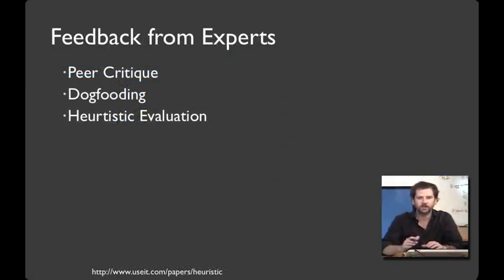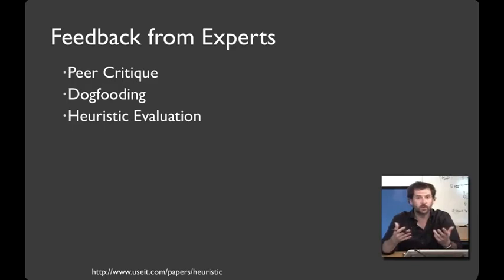Our third category of techniques is to get feedback from experts. For example, in this class, we're going to do a bunch of peer critique for your weekly project assignments. In addition to having users try your interface, it can be important to eat your own dog food and use the tools that you build yourself. When you're getting feedback from experts, it can often be helpful to have some kind of structured format, much like the rubrics that you'll see in your project assignments. And for getting feedback on user interfaces, one common approach to this structured feedback is called heuristic evaluation, and you'll learn how to do that in this class. It was pioneered by Jacob Nielsen.